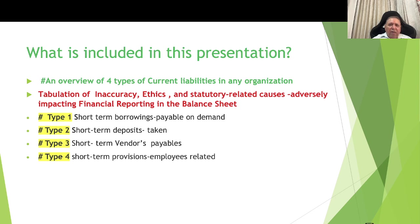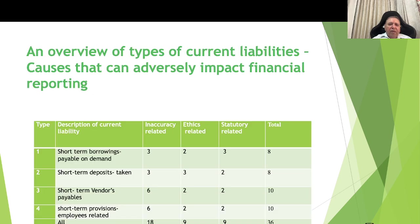Then I will take up individually the four types of current liabilities: Type 1 — short-term borrowings payable on demand; Type 2 — short-term deposits taken; Type 3 — short-term vendors payable; and Type 4 — short-term provisions, employees-related. This is an overview of the types of current liabilities and the 36 causes that can adversely impact financial reporting.